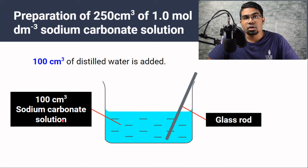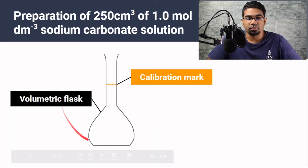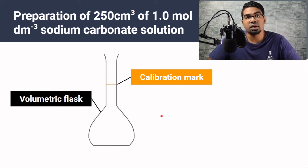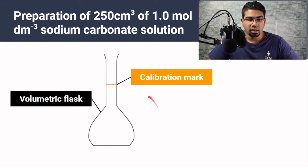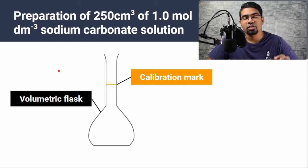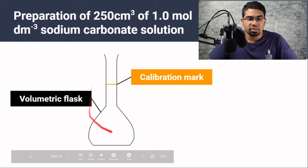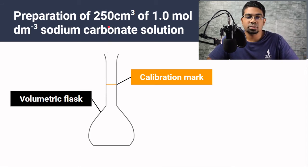We use distilled water because it has undergone distillation, removing impurities. Then we use a volumetric flask, which gives a very accurate measure of volume. It has a single calibration mark — not a graduated scale — that precisely marks when the volume of solution has reached the desired amount. In this case, we use a 250 cm³ volumetric flask because that is the final volume we intend to prepare.